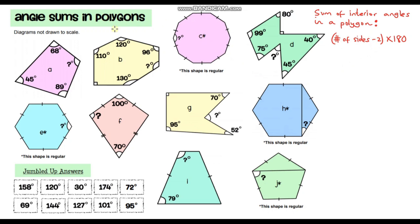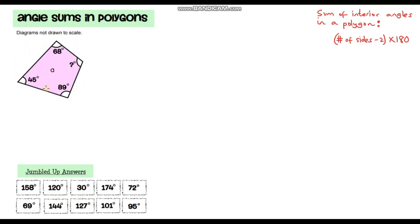So let's get on with the task now. We have to work out the missing angle in each of these polygons. The answers are already given but they have been jumbled up. As you go through each question, find your answer in the grid — if your answer is in the grid you've probably got it correct, then just tick it off and move on to the next one. I'm assuming you've paused the video now, so let's go through this together.